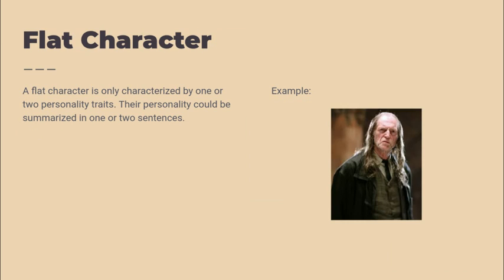A flat character is only characterized by one or two personality traits, and their personality could be summarized in one or two sentences. A good example is Argus Filch. In the Harry Potter series, Argus Filch is the caretaker and he's very grumpy — and those are the two sentences you need to understand his character.